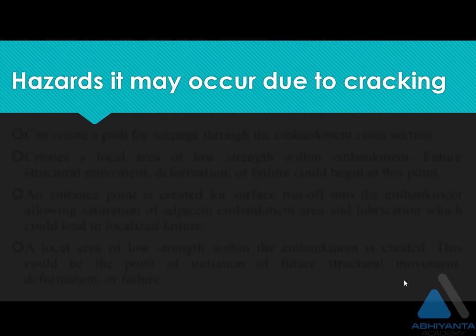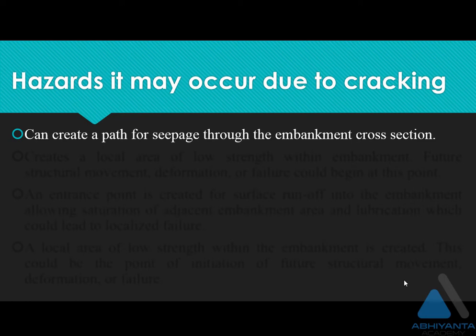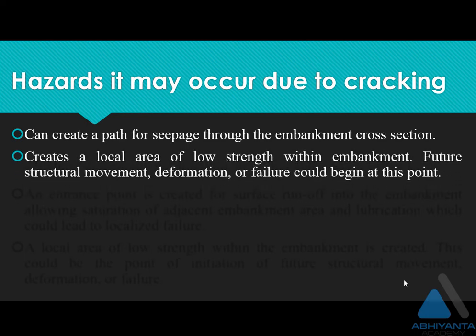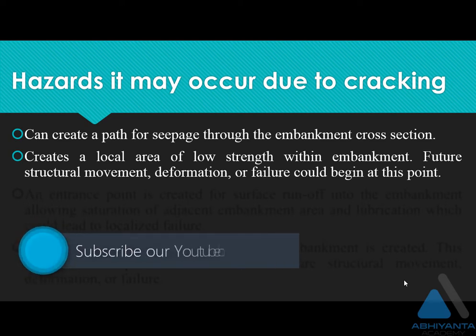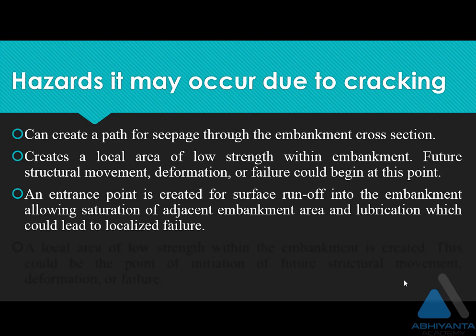Which kinds of hazards can cracking create? It can create a path for seepage through the embankment cross section, which may cause a failure to the embankment dam. It creates a local area of low strength within the embankment, and due to that, future structural movement, deformation, or failure could begin at this point. An entrance point is created for surface runoff into the embankment, allowing saturation of adjacent embankment areas and lubrication, which could lead to localized failure.